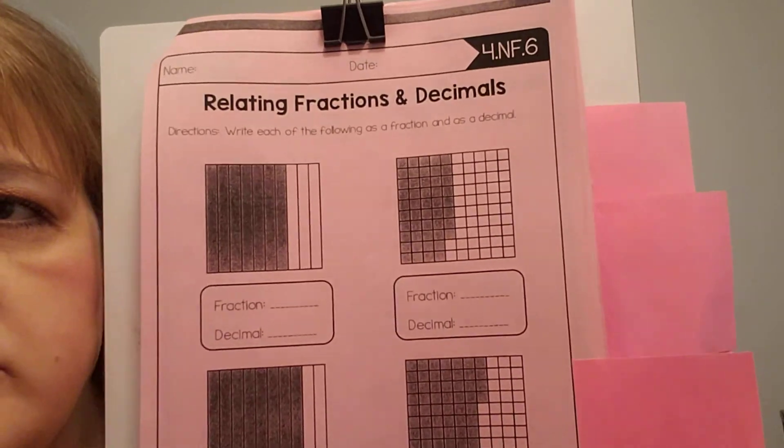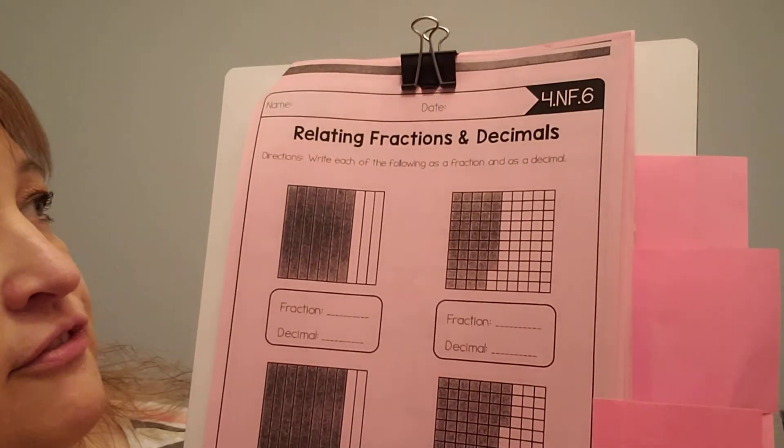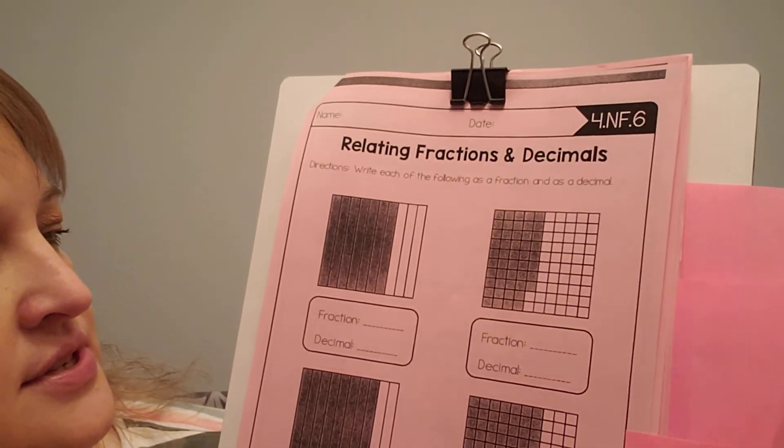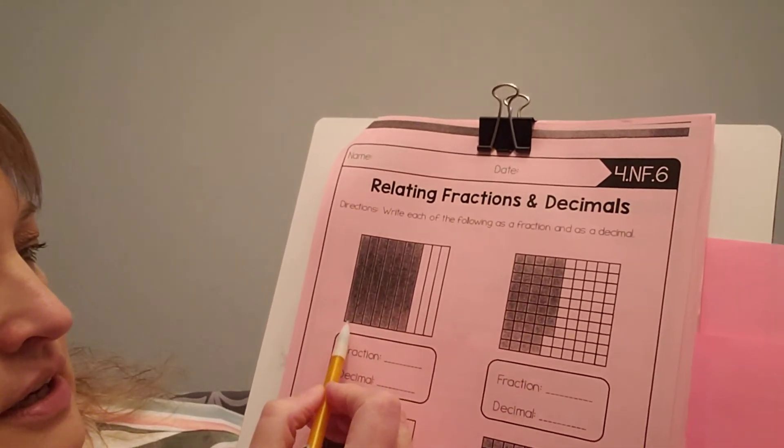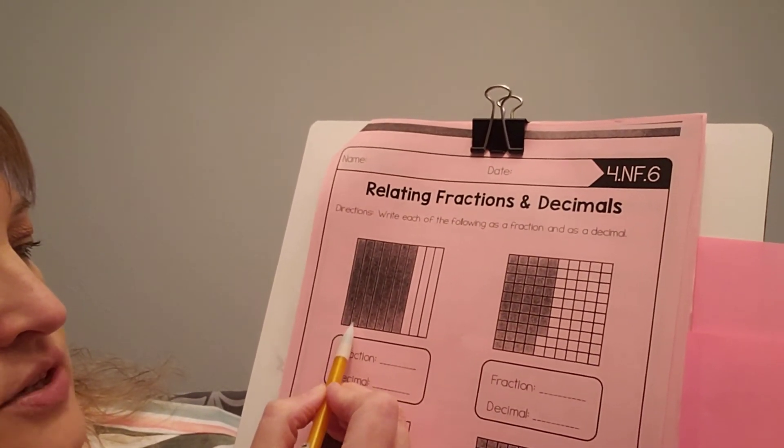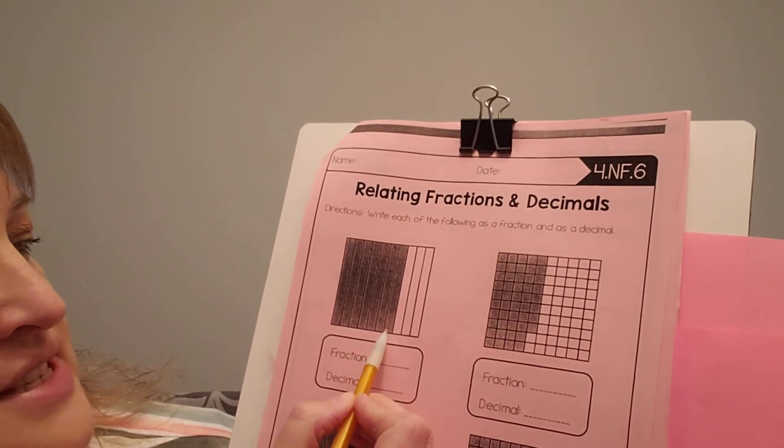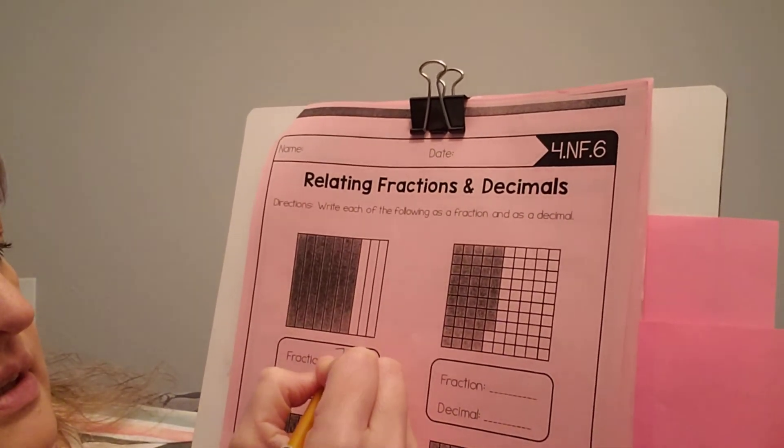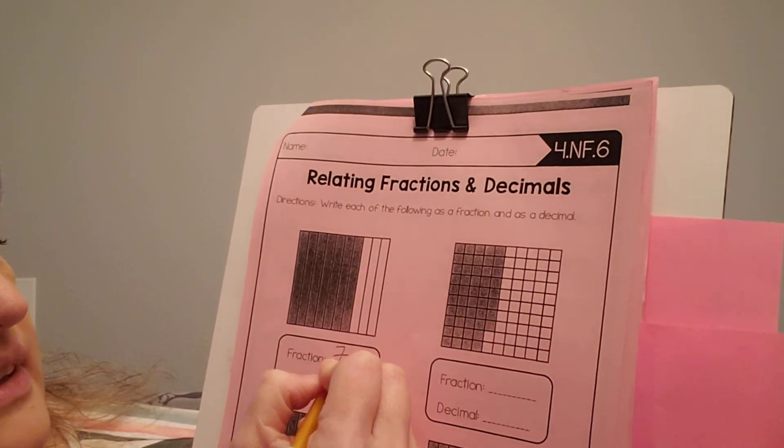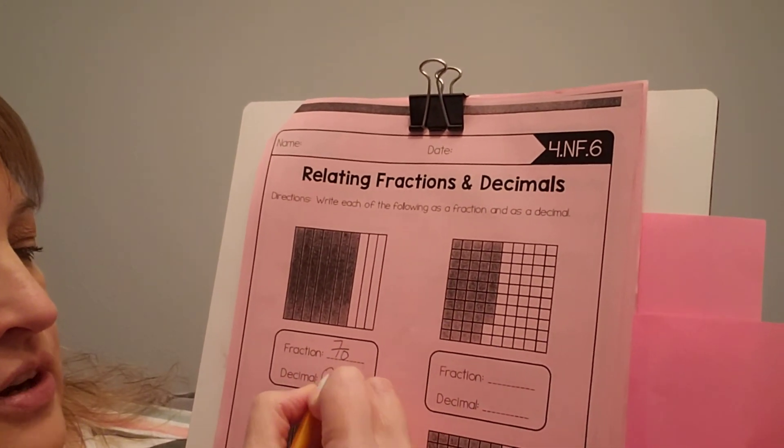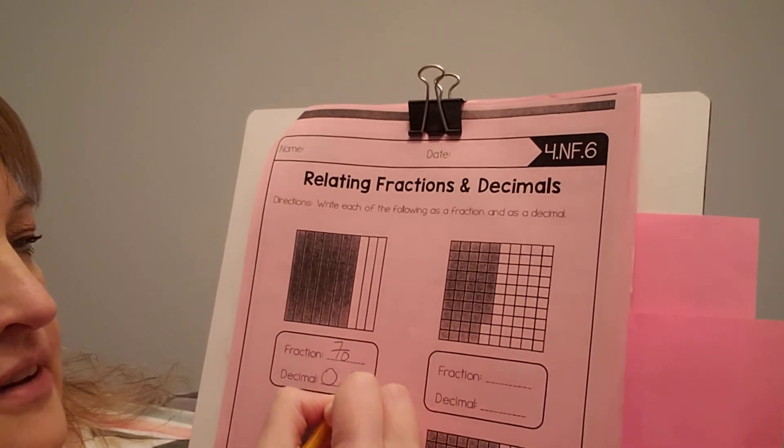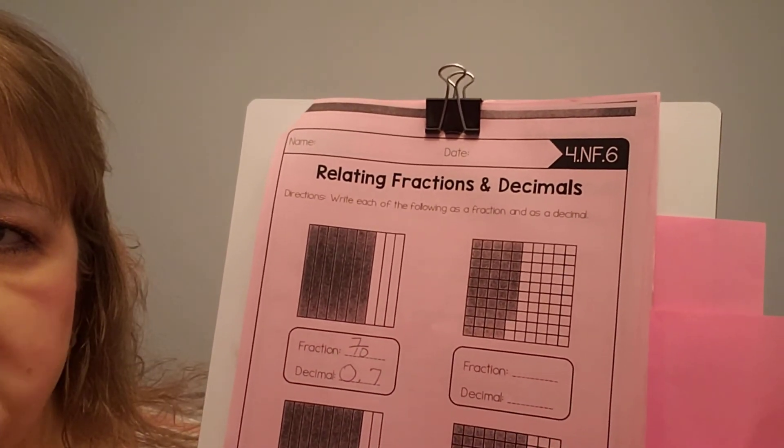NF6. It's just one page away. And we're going to do relating fractions and decimals. Okay. So let's do this first one together. The fraction is 1, 2, 3, 4, 5, 6, 7 out of 10. And what would my fraction be? I don't have any whole numbers. And I have 7 tenths.